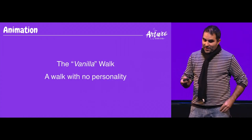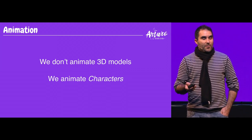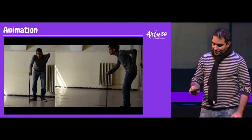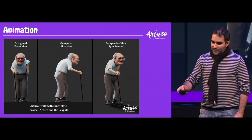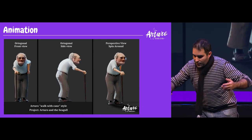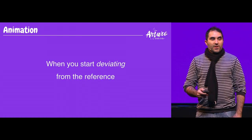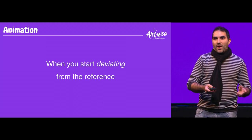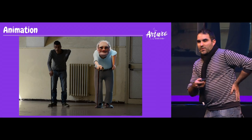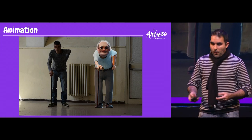A Vanilla Walk is a walk without personality, but we don't animate 3D models — we animate characters. So we have to bring in personality. We had footage from Salvatore showing the kind of walk Arturo has to have, and this was my first step. It's kind of different because Arturo has a different body — he's already bent, curved, and forward — and he's carrying an envelope. It's important to know when to follow the reference and when to deviate. The elbow position was too unnatural and awkward, so we had to adapt the position of the feet, elbow, and torso.